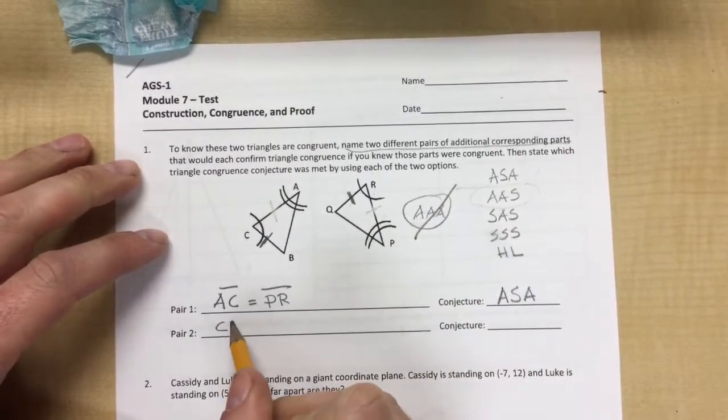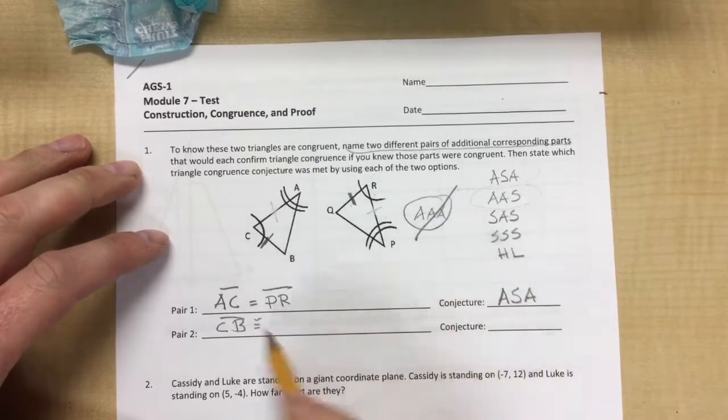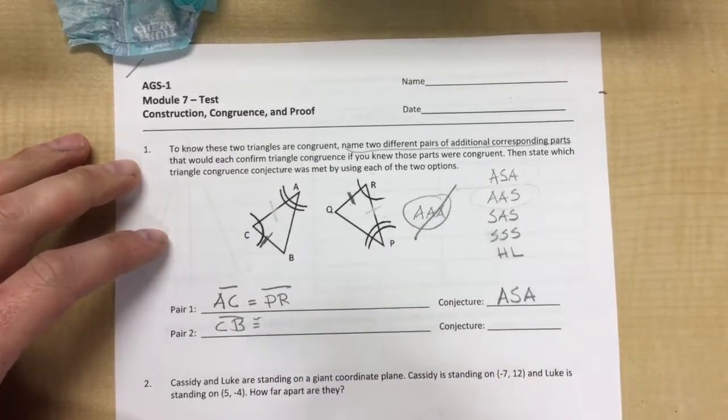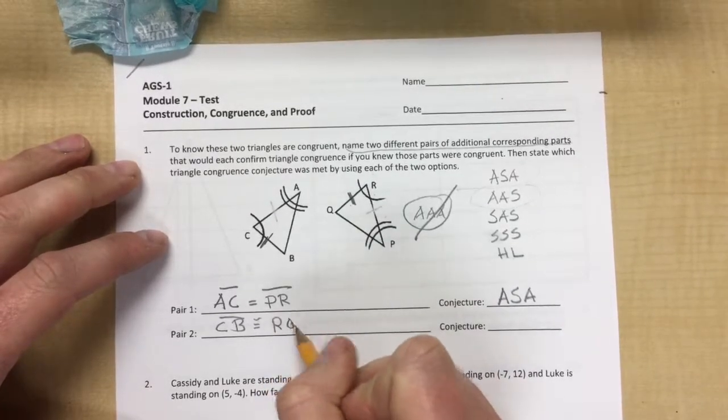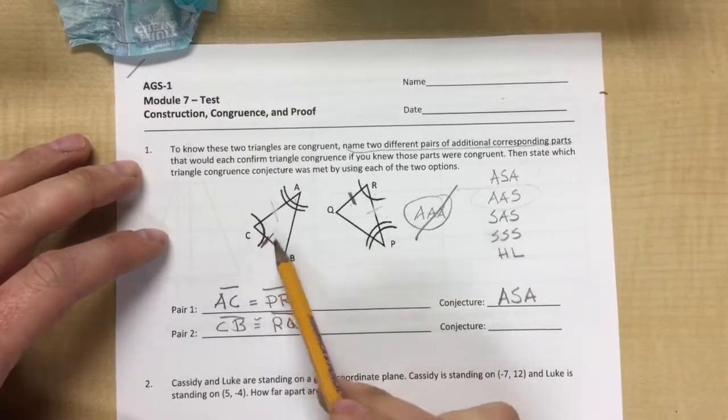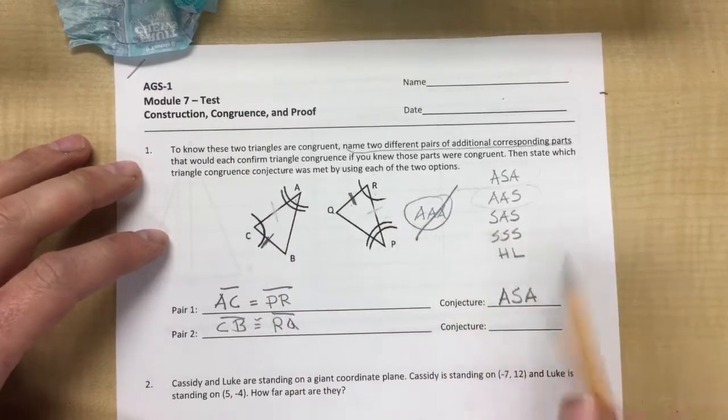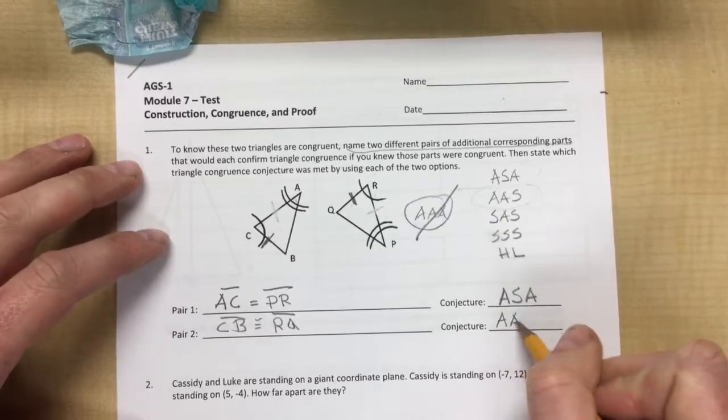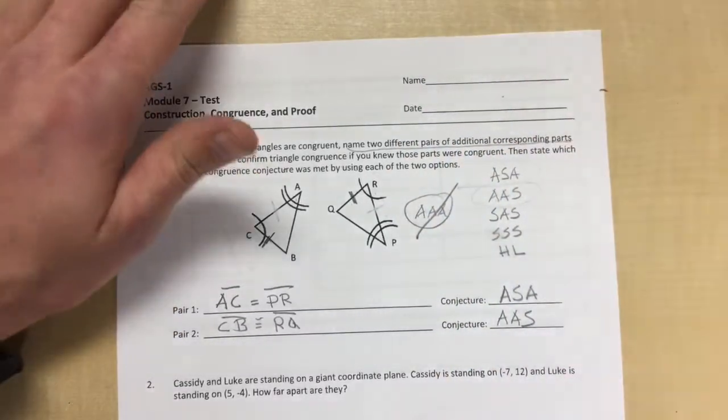So another thing that we can do would be we could say that this side is equal to this side, so that would be CB is equal or congruent to—I'm not picky if you put the little thing on top, either way is fine—CB is equal to RQ. And that gives me two angles and a side again, but it's not the side that falls in between the two angles, so that is angle angle side.